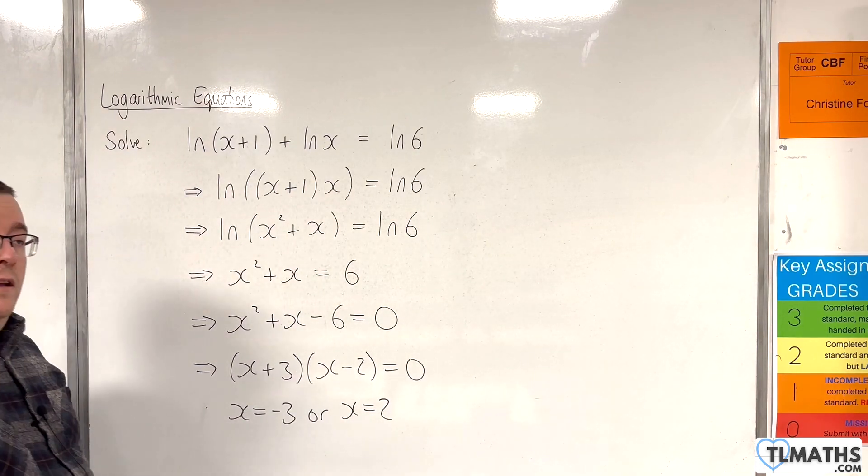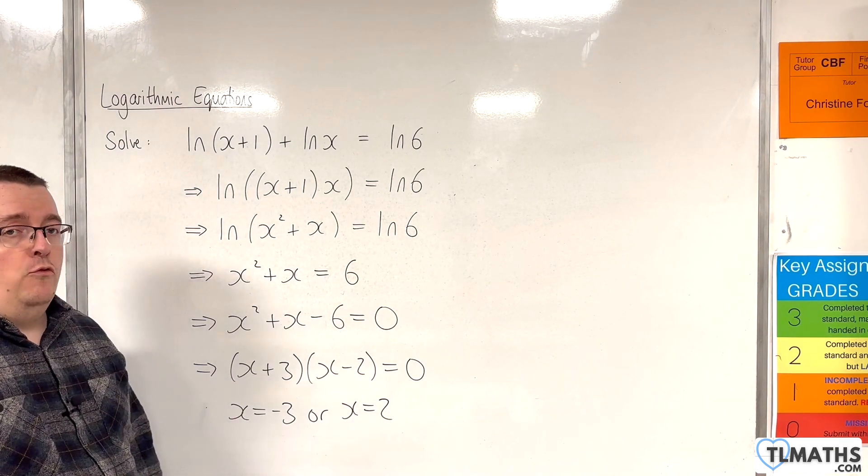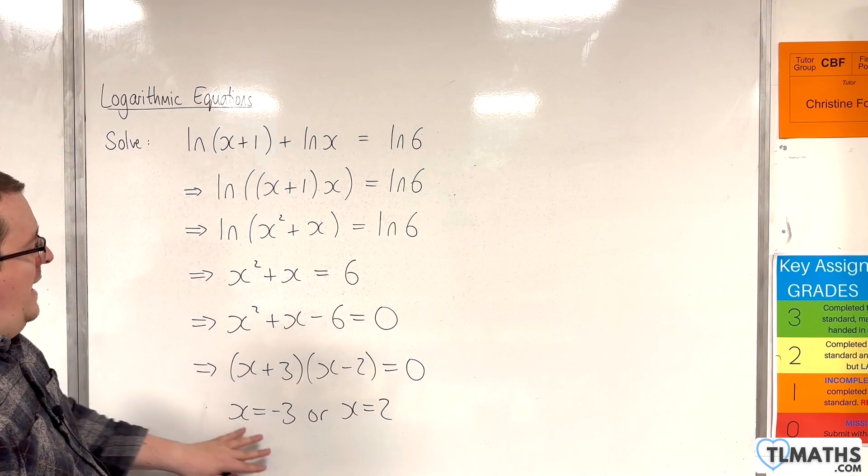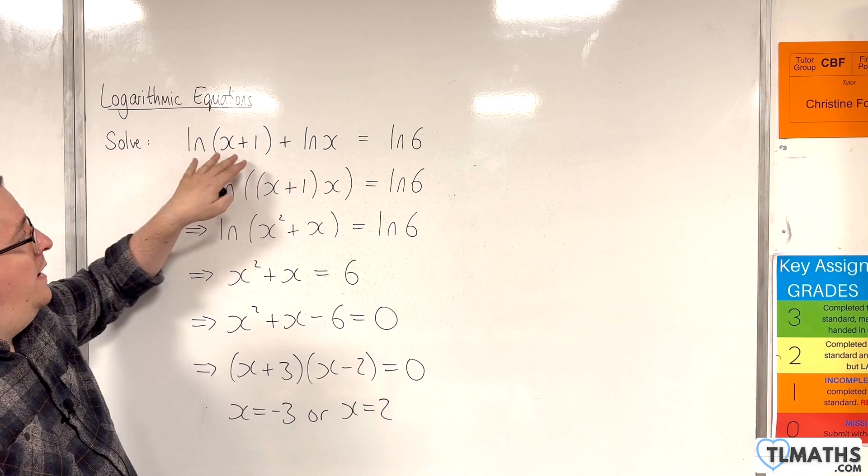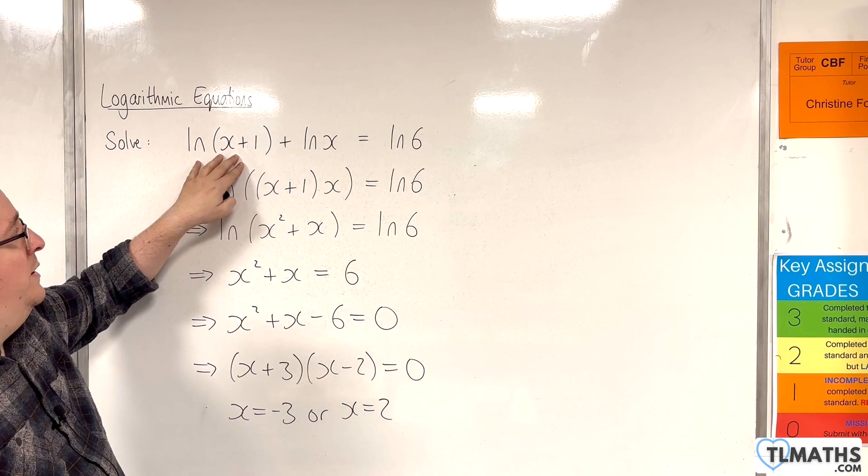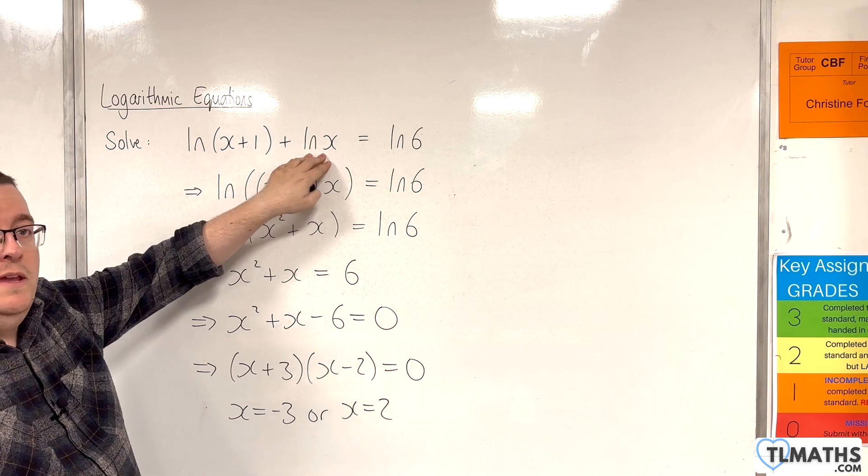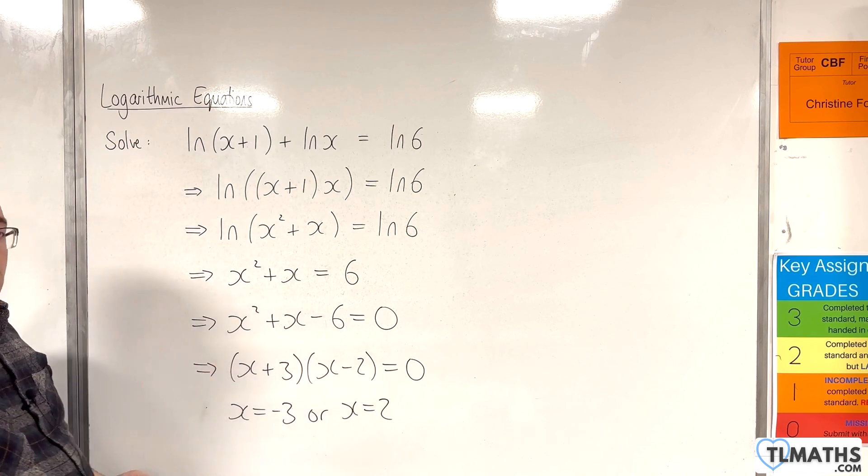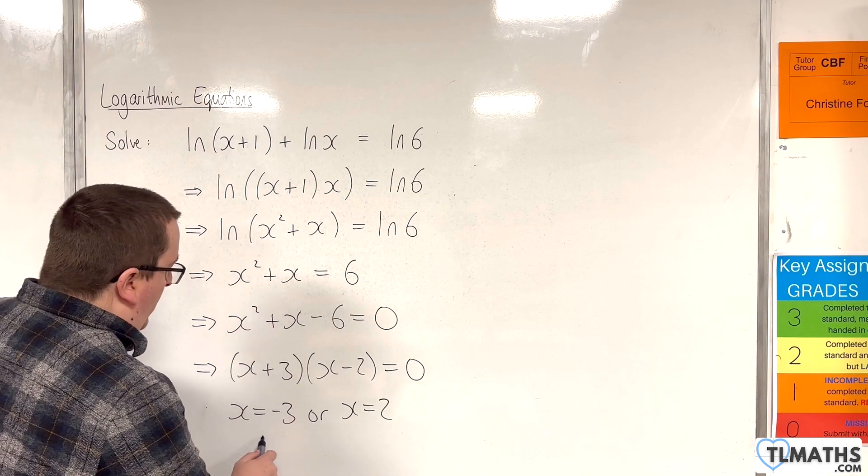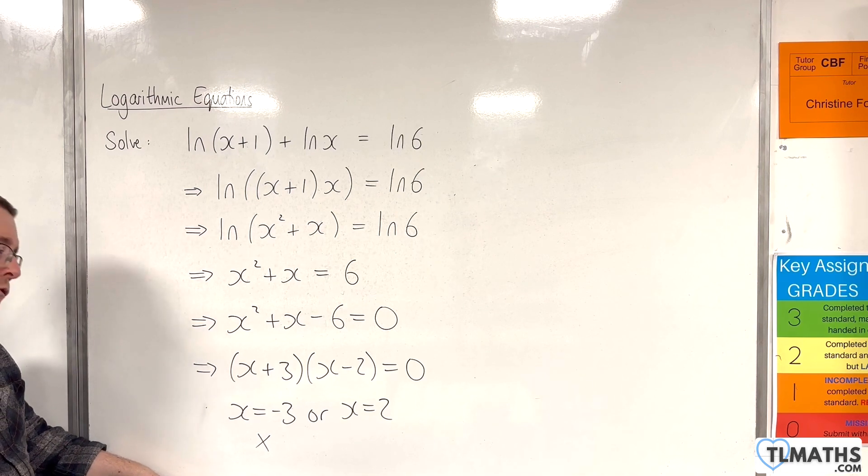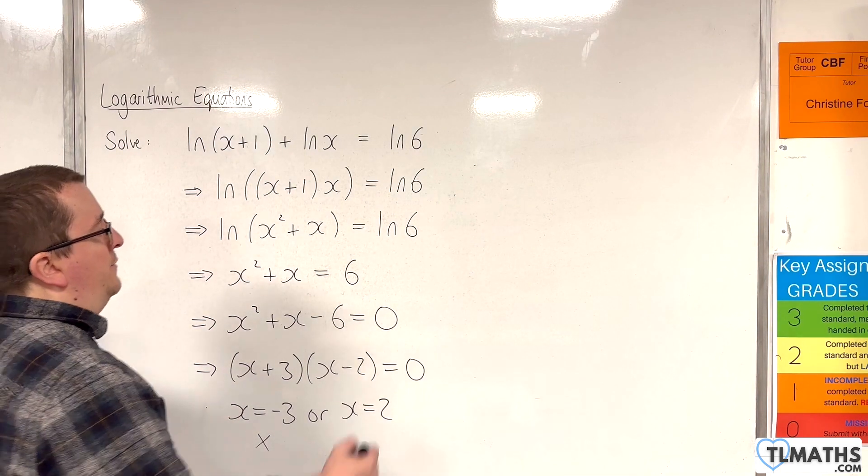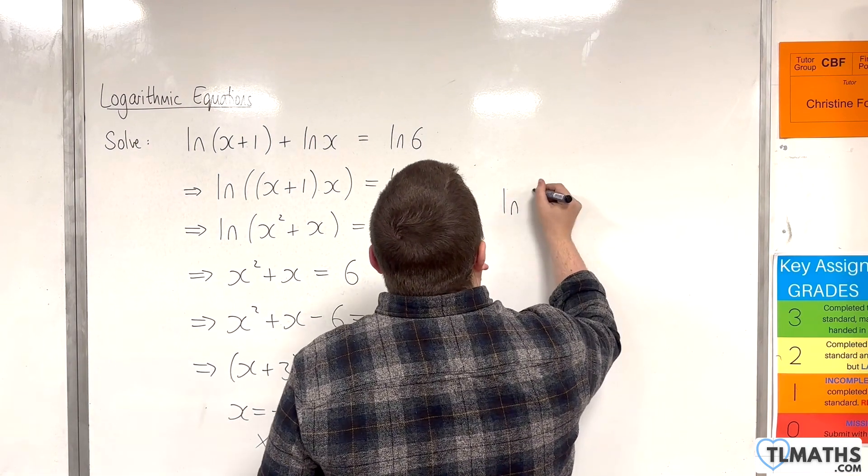Now of course we need to double check that both those solutions work in the original equation. x equals negative 3 doesn't, because we can see either here we'll have natural log of minus 2, or here natural log of minus 3. That does not work. So we cannot have natural log of a negative value. So for minus 3, it is undefined for real values.